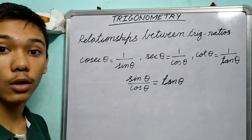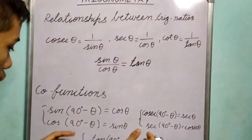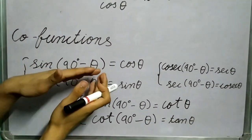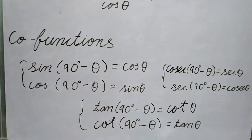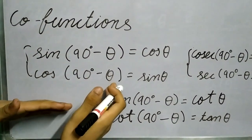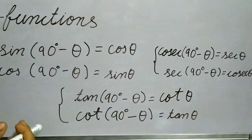Then we explored what co-functions are. These are co-functions. We can express sin(90° - θ) as cos θ. And we proved this in our earlier video. And similarly we can say cos(90° - θ) gives us sin θ. So sin θ and cos θ are co-functions of each other.